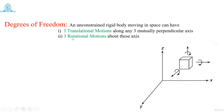Similarly, the body can have three rotational motions about those same three axes — rotation about x-axis, rotation about y-axis, and rotation about z-axis. These are the maximum possible motions a body can have if you consider a 3-axis coordinate system.